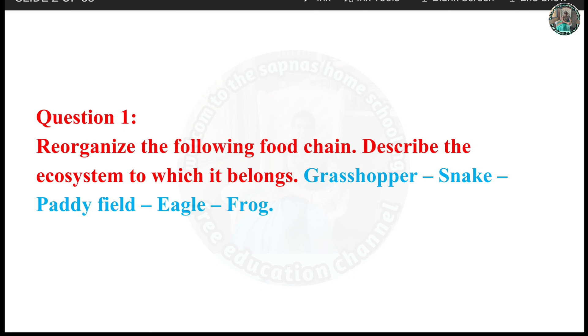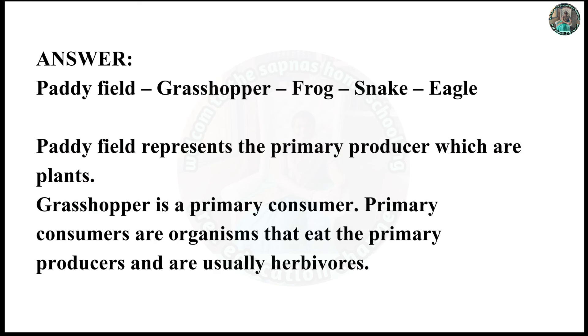First question: Recognize the following food chain and describe the ecosystem to which it belongs. Answer: Paddy field, Grasshopper, Frog, Snake, Eagle.